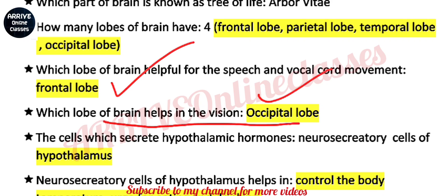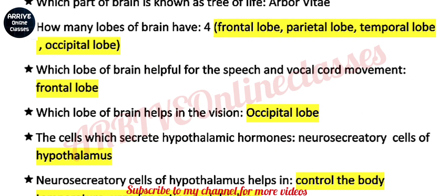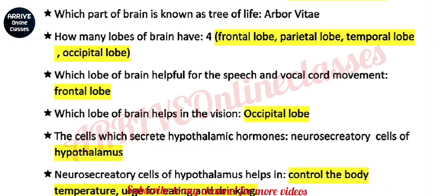Which cells excrete hypothalamic hormones? This is an NCRT question, a NEET question, and also a TAT commission question. The answer is neurosecretory cells of the hypothalamus. These neurosecretory cells of the hypothalamus help in controlling body temperature and the urge for eating and drinking.